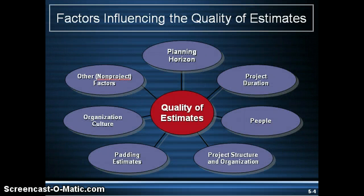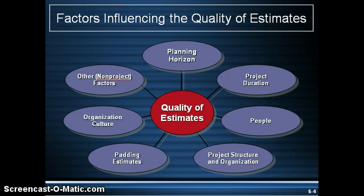There are different factors influencing the quality of estimates. First is the planning horizon, which is basically the time before the project will start. If a project is not due to start for another year, the quality of the estimate may be low because of different things like labor rates, material costs, availability of resources, and technology available. So the quality of the estimate will be affected based on the length of time before the project even begins.